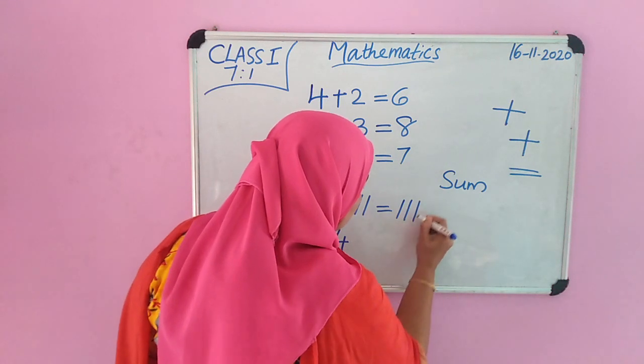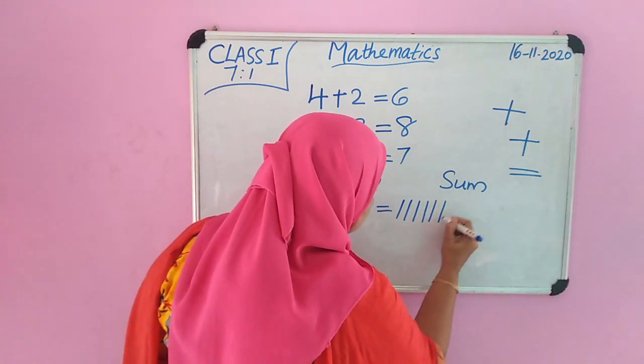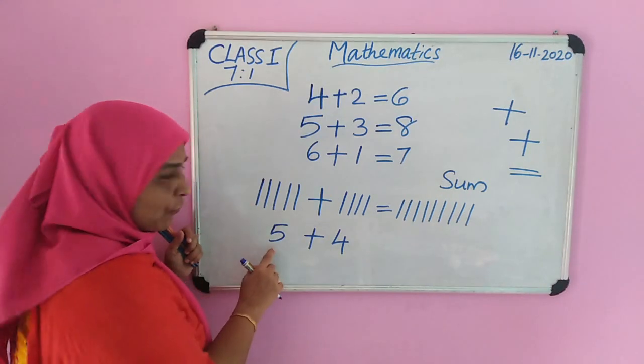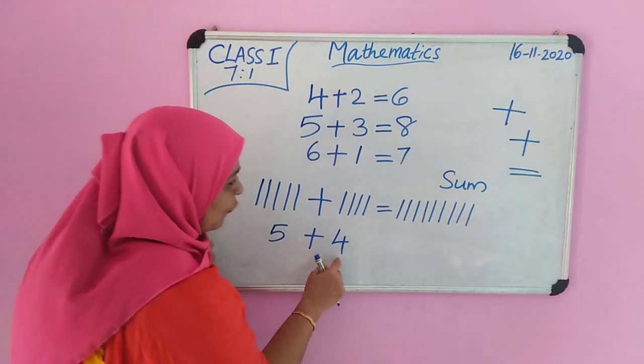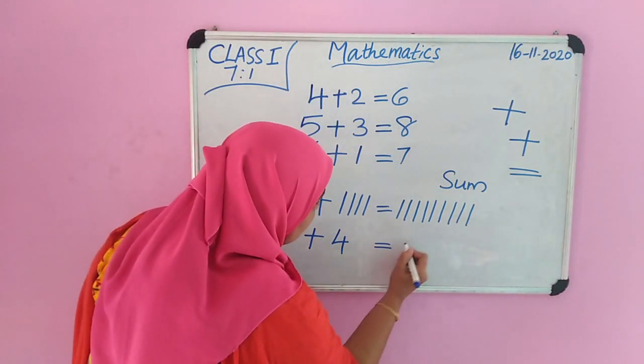1, 2, 3, 4, 5, 6, 7, 8, 9. 5 plus 4 equal 9.